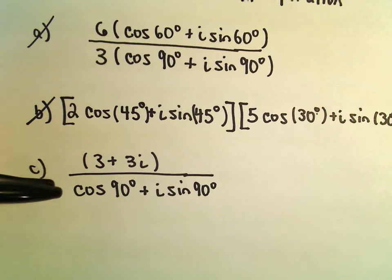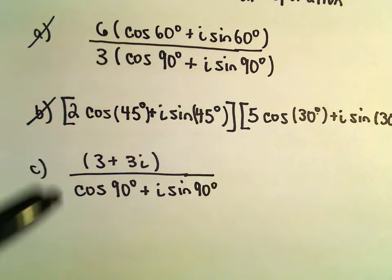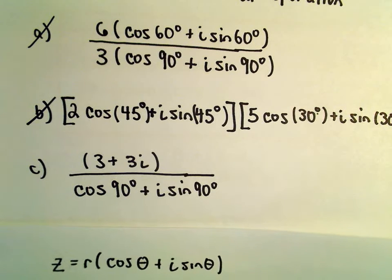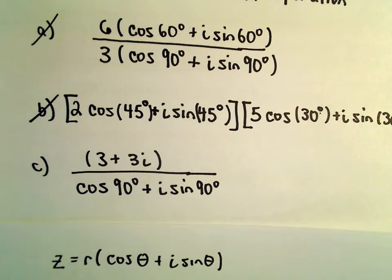So we've got 3 plus 3i over cosine of 90 degrees plus i sine of 90 degrees. Recall we can write a number in polar form: z equals r cosine of theta plus i sine theta.